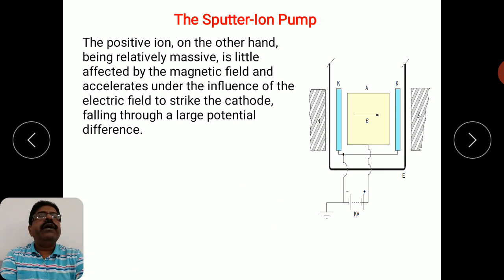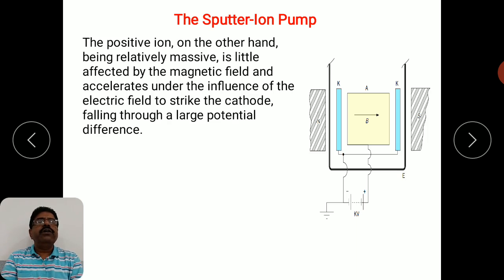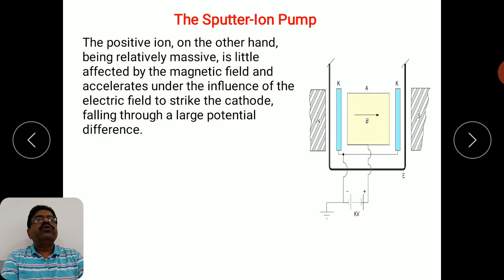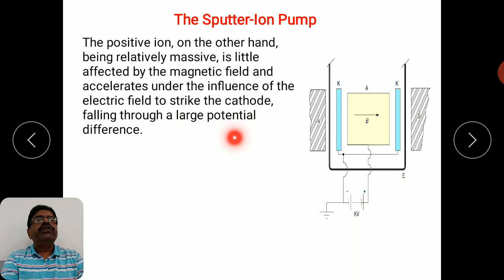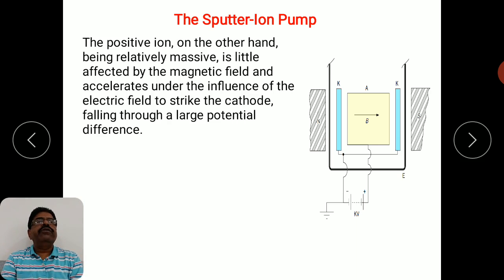Positive ions, being relatively massive, are less affected by the magnetic field. They accelerate under the influence of the electric field toward the cathode, falling through the large potential difference, and strike the cathode with high energy, thereby producing sputtering.